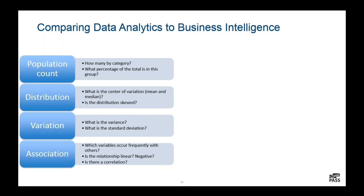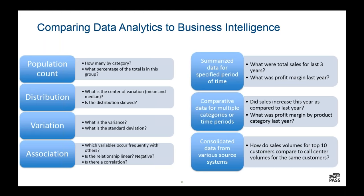Those four numbers — mean, median, variance, and standard deviation — are things we want to look at regularly when analyzing our data. But these aren't things I'd necessarily report to the business to say here's how your business is doing. These are things we look at to understand the structure of our data, check for outliers, and determine whether we might have dirty data. Business intelligence, I think, is more about the questions the business asks over and over again, summarizing data for defined periods of time and comparing points in time to find trends.